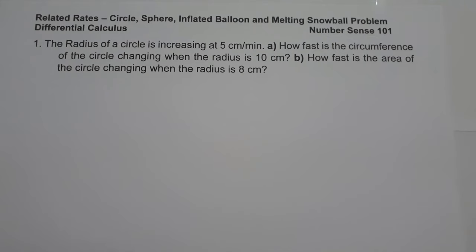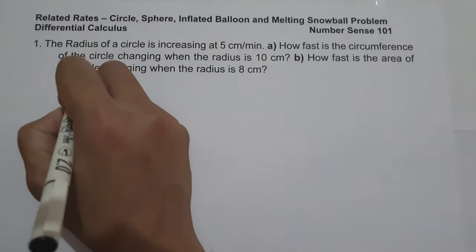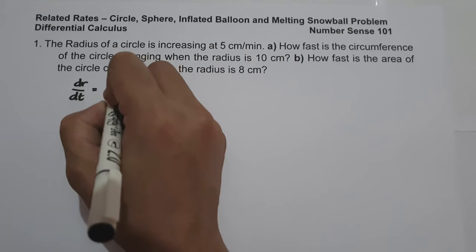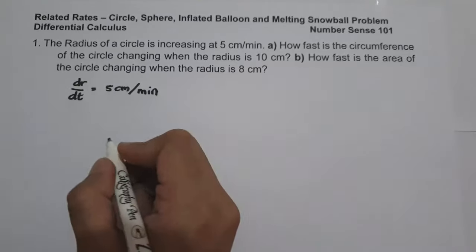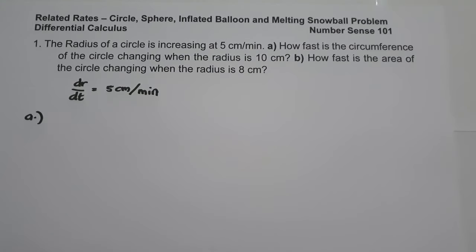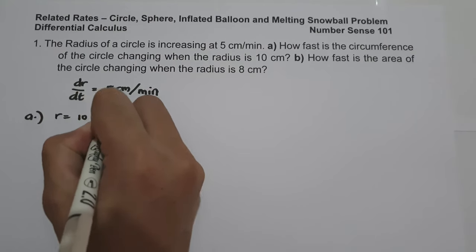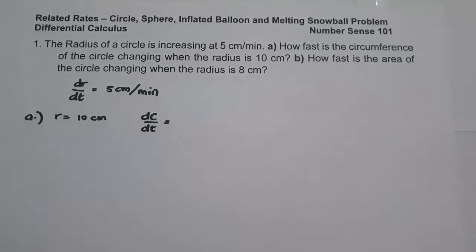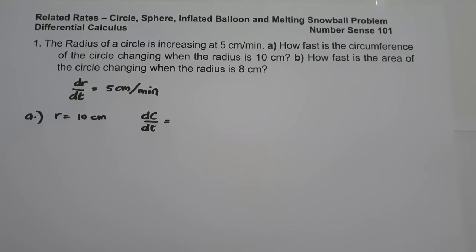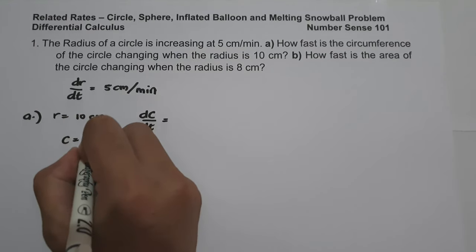So let us identify first the given. Since the radius of a circle is increasing at 5 cm per minute, that is dr/dt equals 5 cm per minute. On letter A, how fast is the circumference changing when the radius is 10 cm? We are looking for dc/dt. The formula of the circumference of the circle is C equals 2πr.